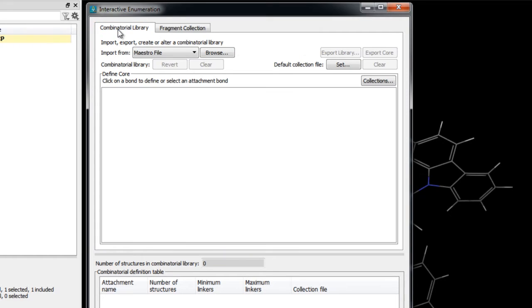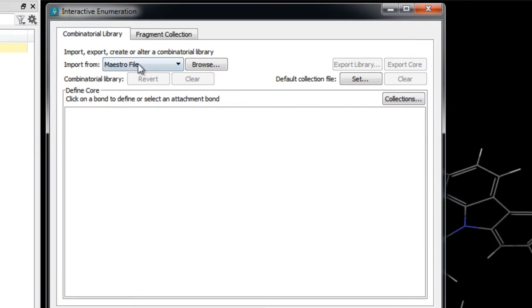Let's begin with the combinatorial library tab. Since our MCP core scaffold is already in the workspace, we'll choose import from workspace and then click import.